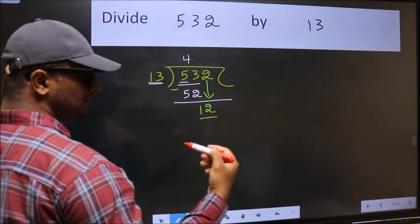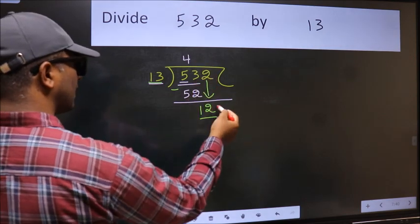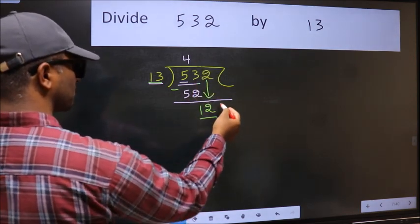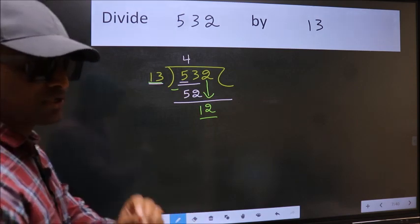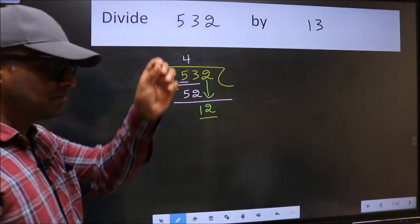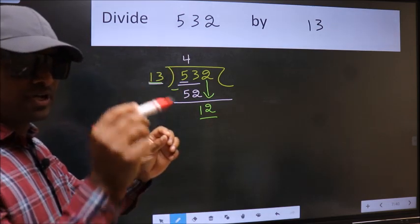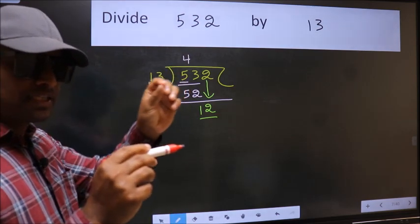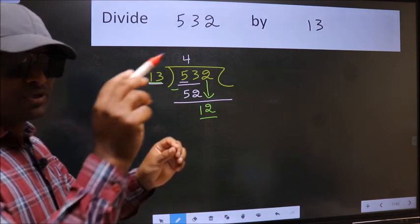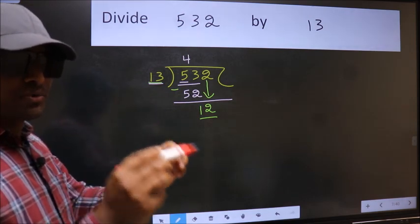In the same step you want to put dot and take zero, which is wrong. I repeat: bring the number down and also put dot take zero both at the same step - you should not do this.